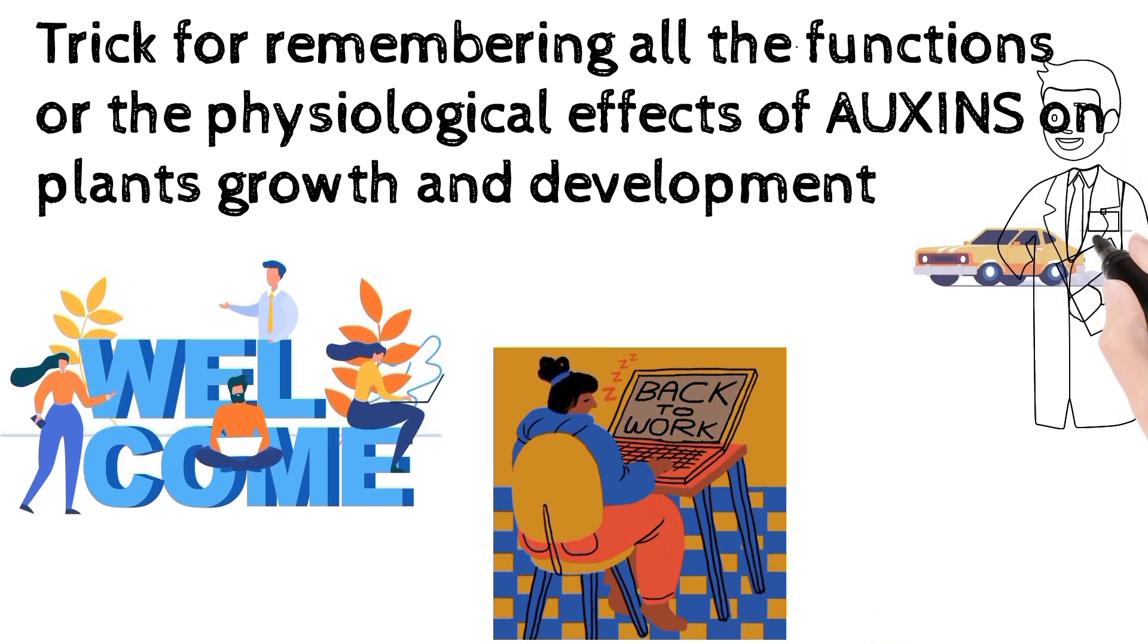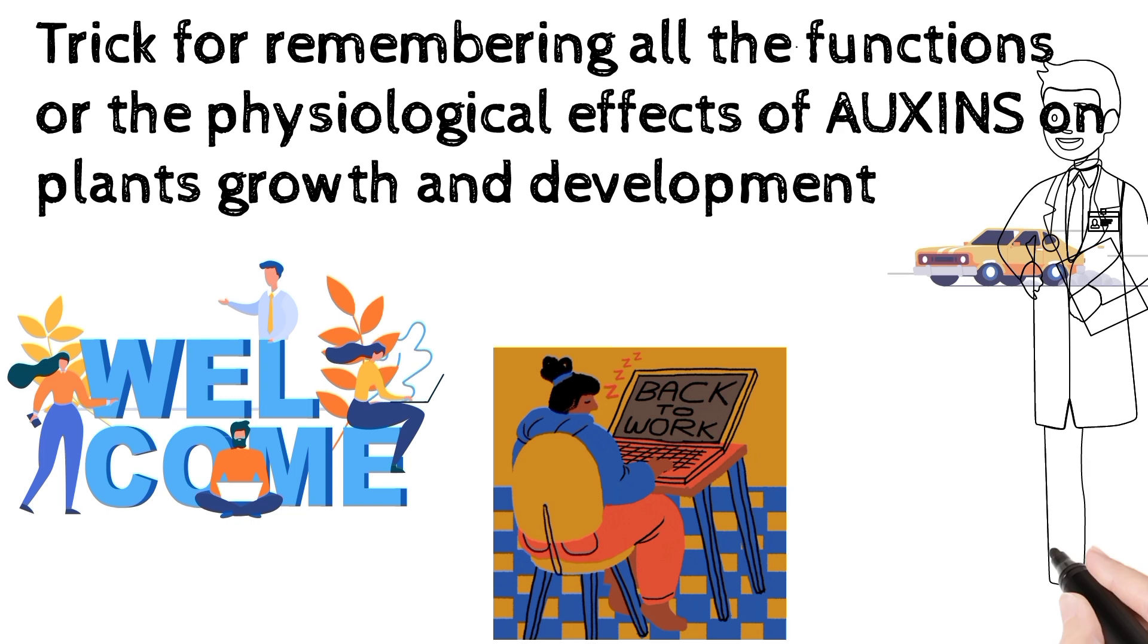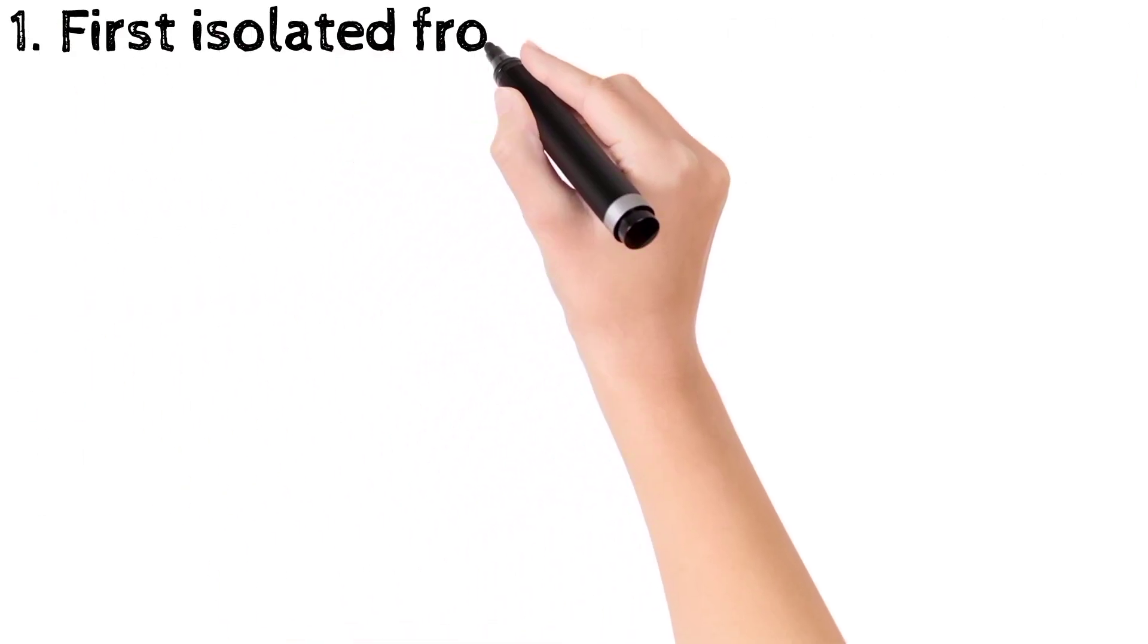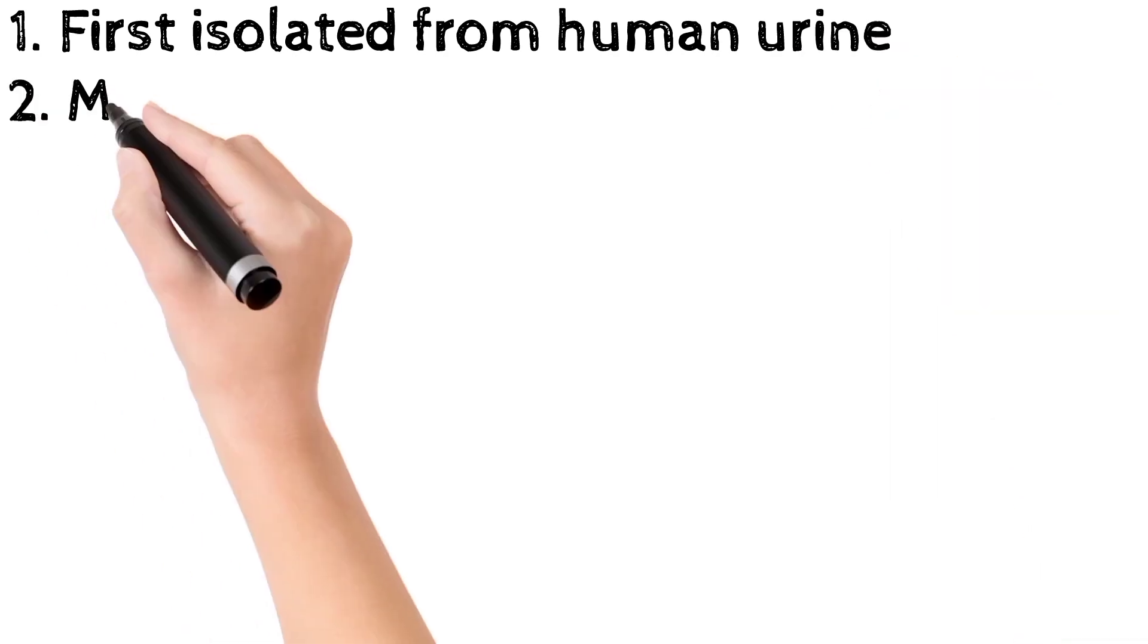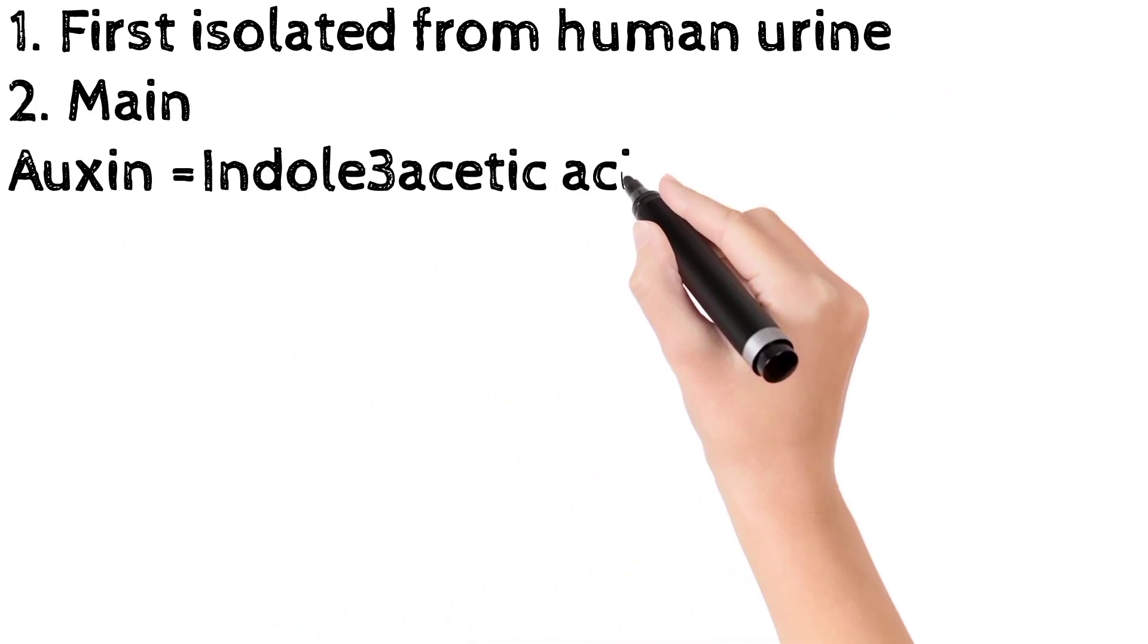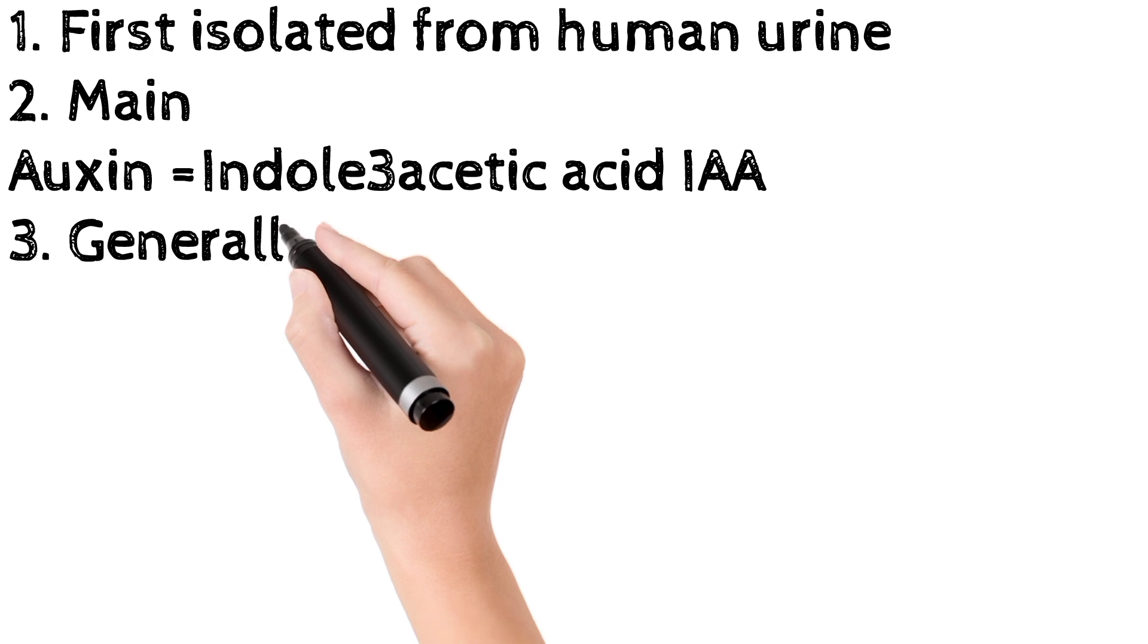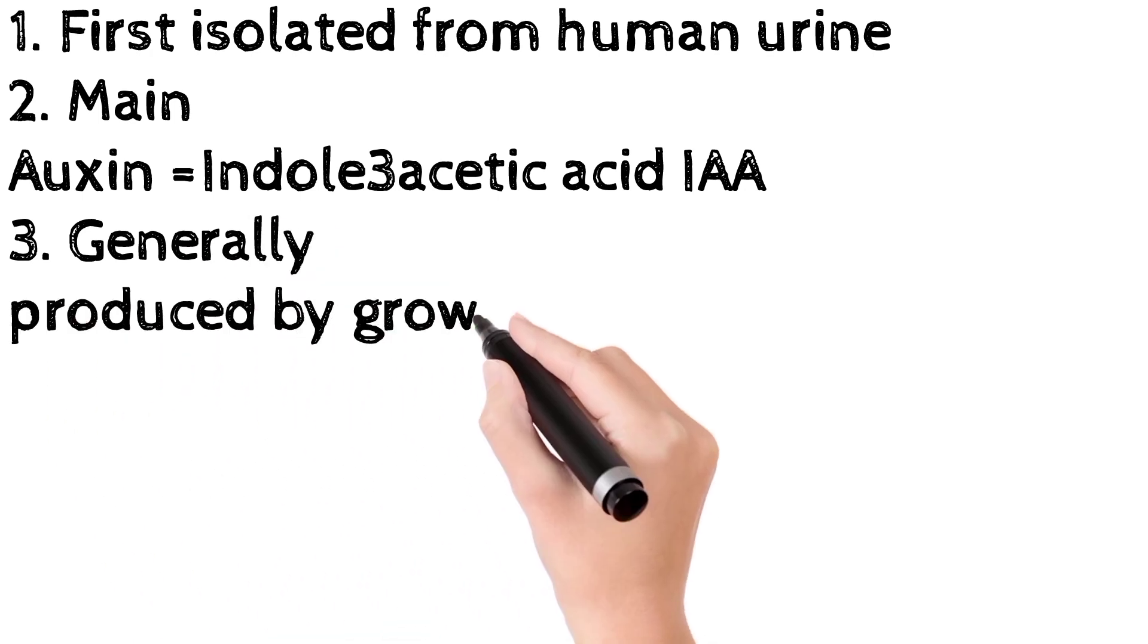Before discussing the trick, let's get to know some important points about auxin. Point number first: auxin was first isolated from human urine. Main auxin is indole-3-acetic acid or IAA. Auxin is generally produced by growing apices of stems and roots.